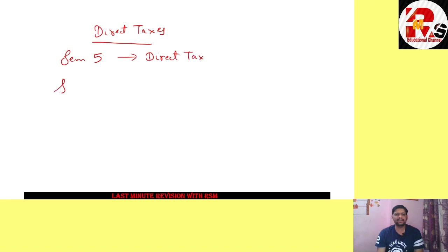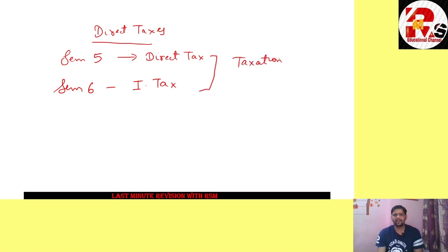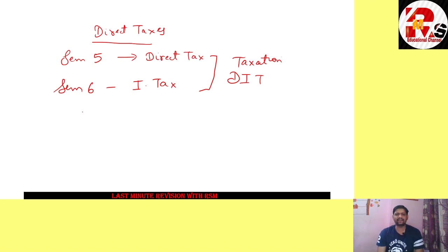In Semester 5 you have Direct Tax, and in Semester 6 you have Indirect Tax. Both direct tax and indirect tax constitute your paper of taxation, which is called DIT. The simple difference is: direct tax is a tax levied on the income of an individual.